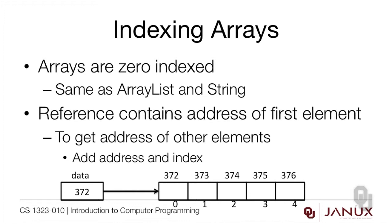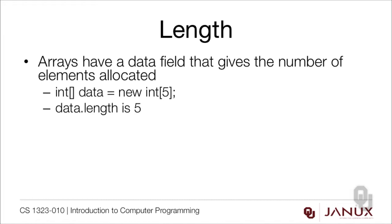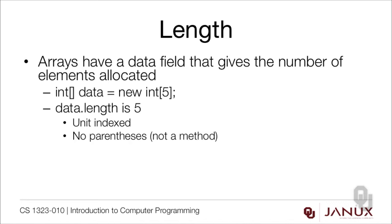This makes it possible to jump to any place in the array with just one addition operation. That property is called random access, and it's critically important for programming. Now arrays do have a data field that gives the number of elements that have been allocated. So if we do int[] data = new int[5], data.length is going to be five. Notice this is unit indexed, not zero indexed. What's more, there are no parentheses. The reason there are no parentheses here is because length isn't a method — it's data that's stored in the array.